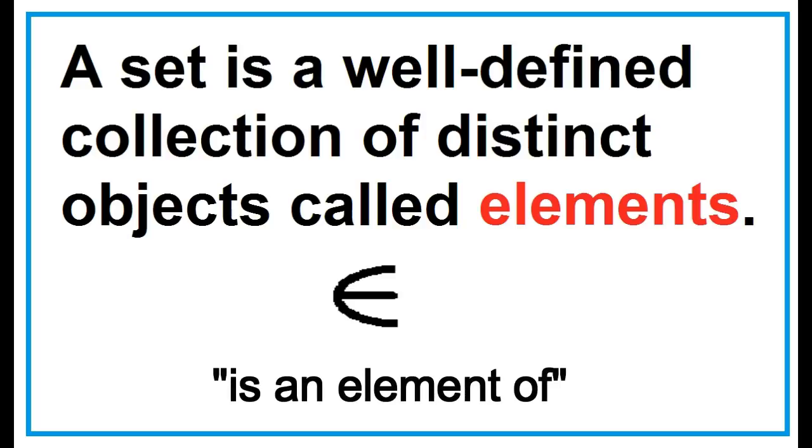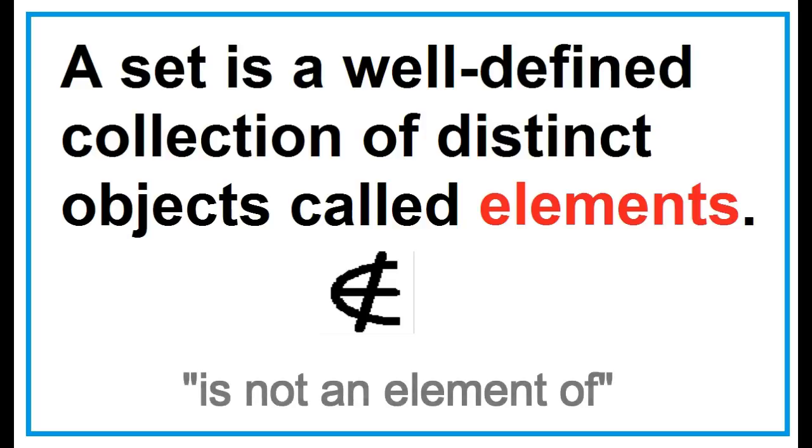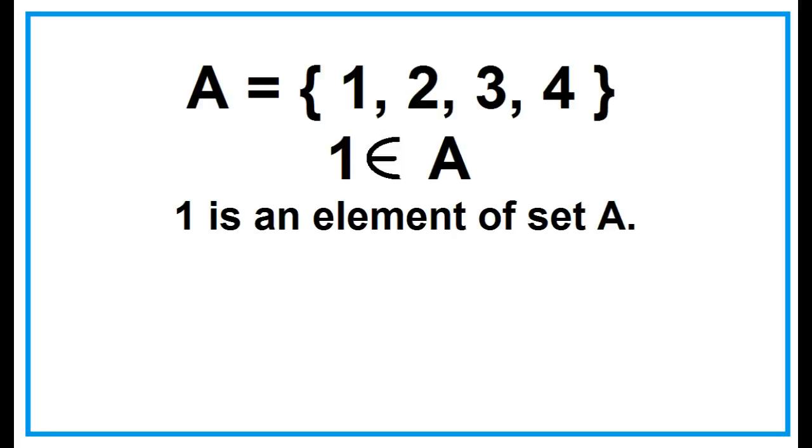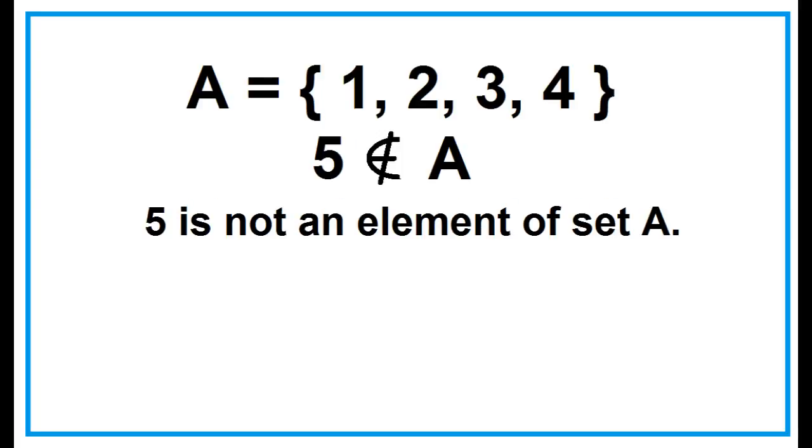This is a symbol for element, and this symbol is not an element. Example: 1 is an element of set A, 5 is not an element of set A.